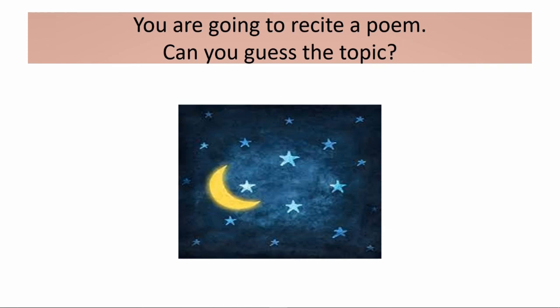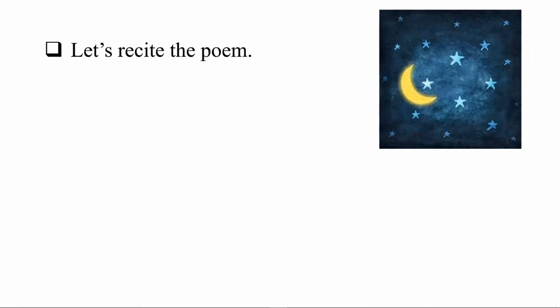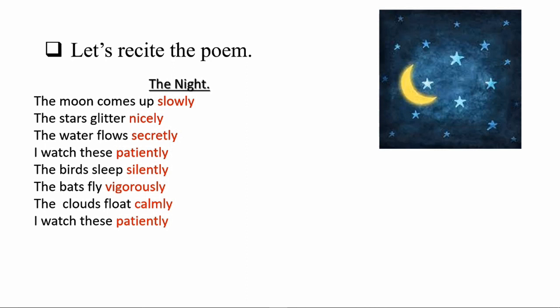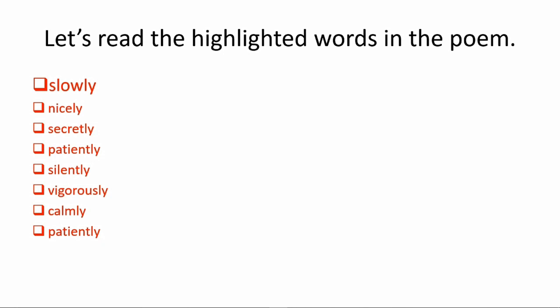Now I am going to recite a poem. Can you guess the topic? Let's recite the poem. The moon comes up slowly. The stars glitter nicely. The water flows secretly. I watch these patiently. The birds sleep silently. The bats fly vigorously. The clouds float calmly. I watch these patiently. Can you see some words highlighted in this poem? The words in red — shall we read them aloud?